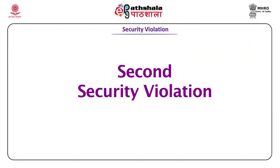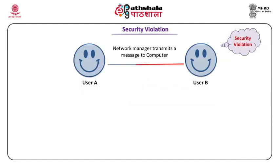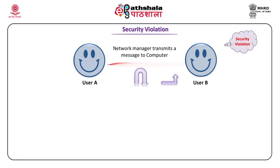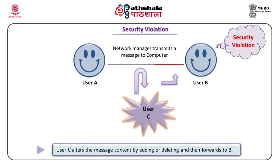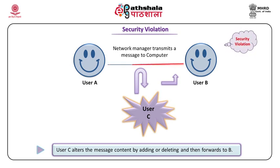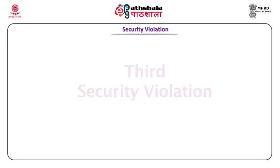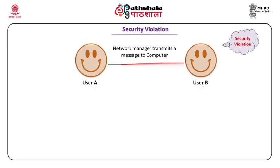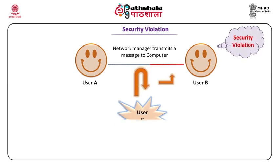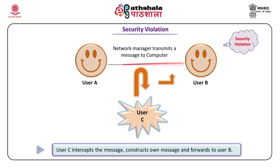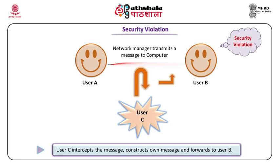The second security violation occurs when user A transmits a message to B. User C alters the message by adding or deleting content and then forwards it to B. The third type of security violation occurs when a network manager transmits a message to a computer. User C intercepts the message, constructs its own message, and gives it to B.